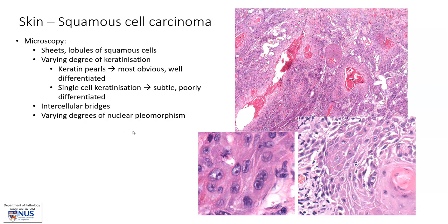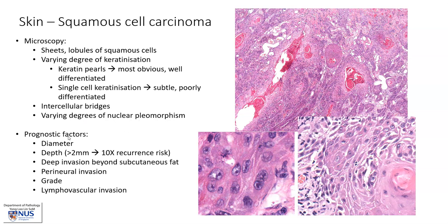There can be varying degrees of nuclear pleomorphism. The prognostic factors include the size, the depth — and especially how deep it goes, whether it invades into the subcutaneous fat layer — the presence of perineural invasion and lymphovascular invasion, and the grade of the tumor, which is generally based on nuclear pleomorphism as well as how readily we see keratin pearls.